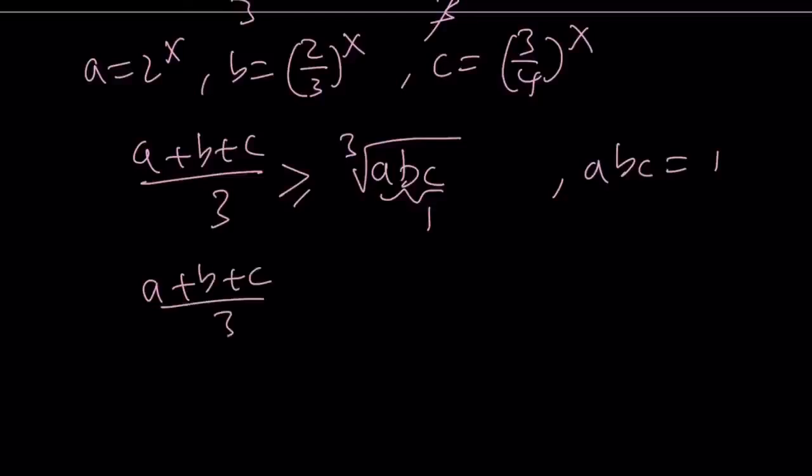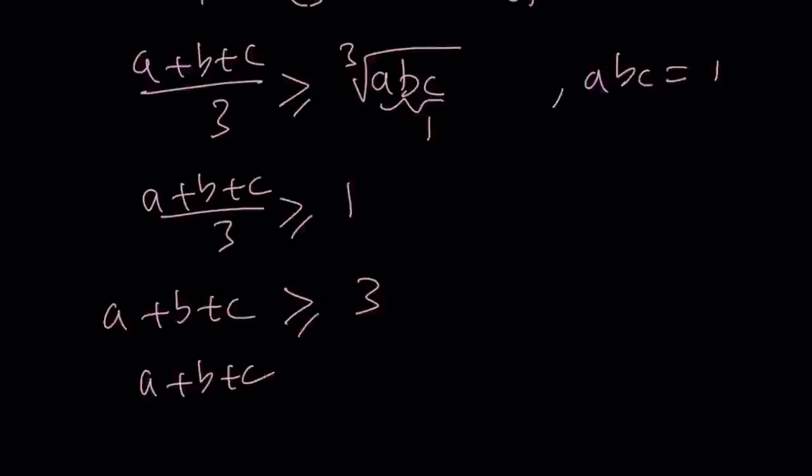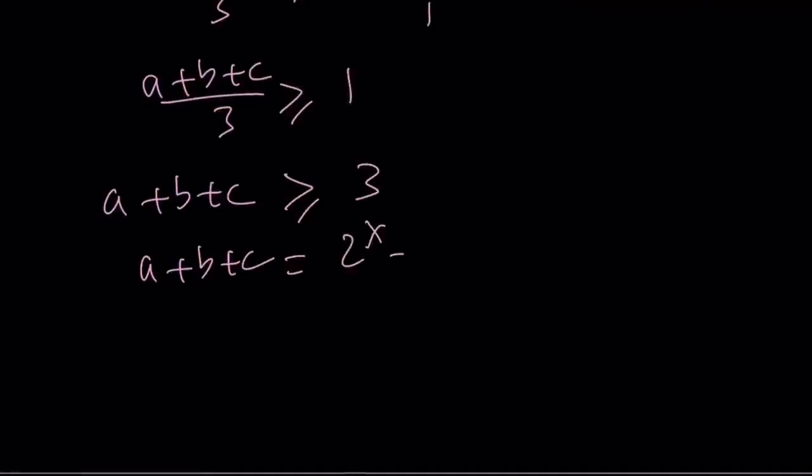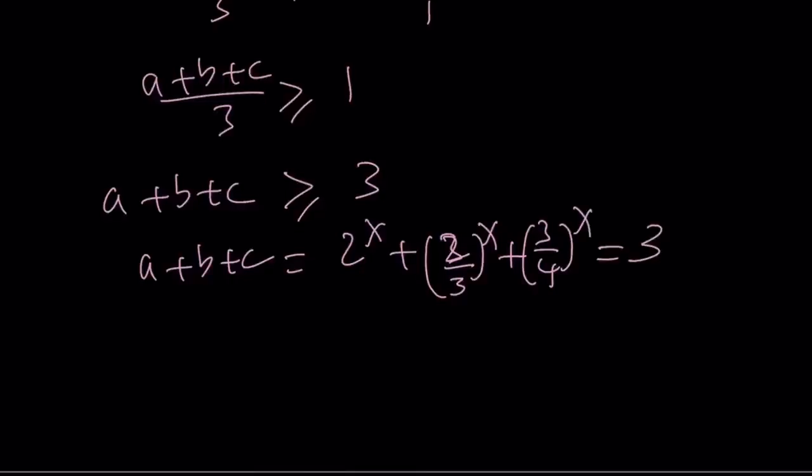From here, we get a plus b plus c over 3 is greater than or equal to 1. And that gives us a plus b plus c is greater than or equal to 3. But we know that a plus b plus c, which is 2 to the power x plus 2 thirds to the power x plus 3 fourths to the power x, is equal to 3.